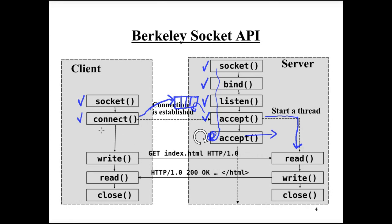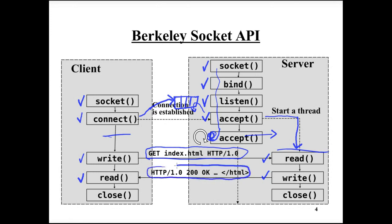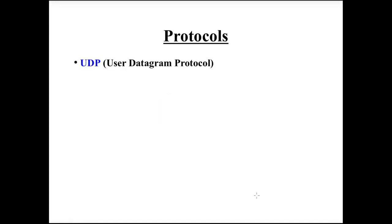When connect has returned on the client side and accept has returned on the server side, the connection is established and the client and server can start to communicate. The client uses the write function to send data — for example, a request to an HTTP server for a resource such as index.html. The server uses the read function to read the received data. Then the server sends the response using the write function, and the client receives the response using the read function — in this case, the content of the HTTP resource index.html. Eventually, both client and server can close the socket.